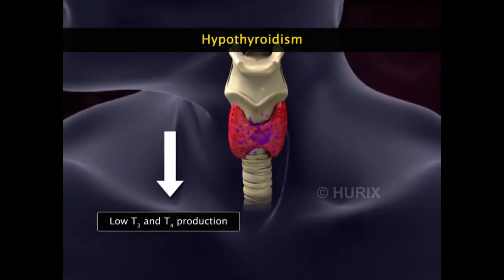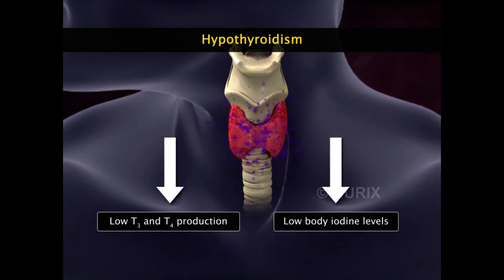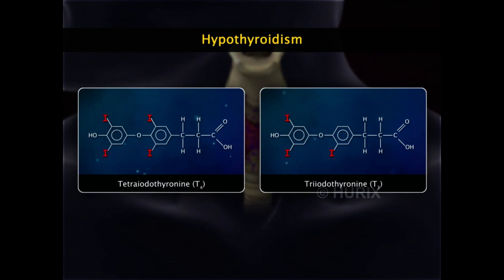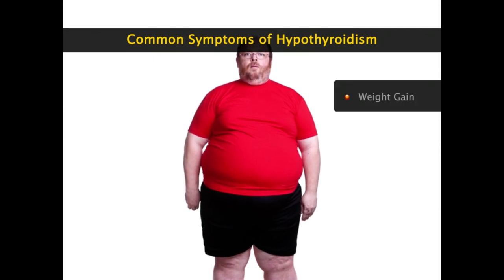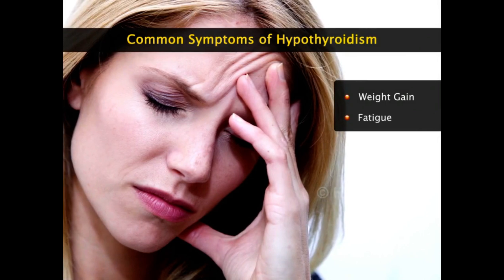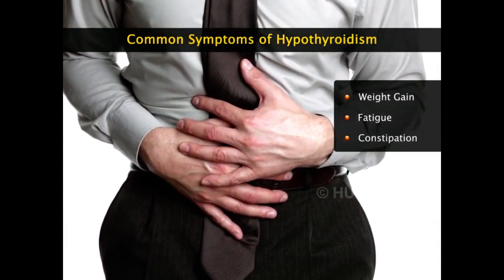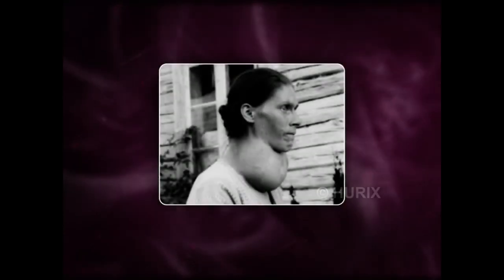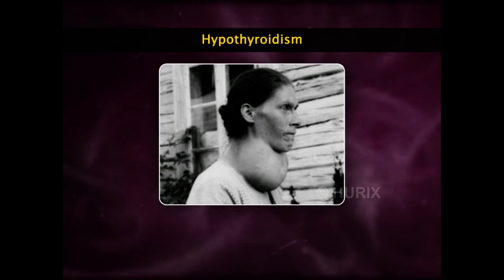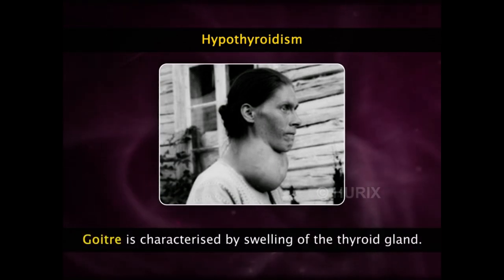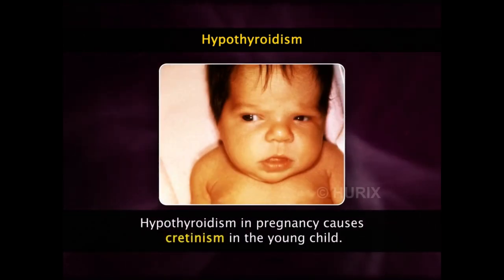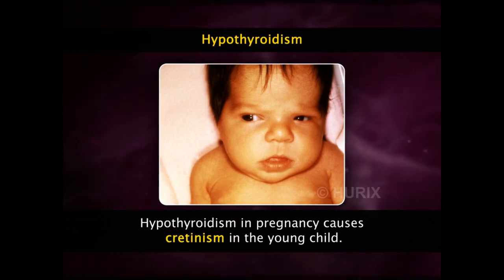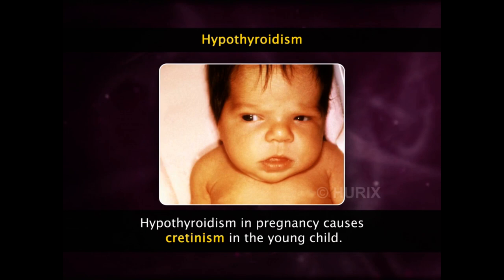Hypothyroidism, or a decrease in secretion of thyroid hormones, is often a result of iodine deficiency, because hormones T3 and T4, which have iodine in their structure, need iodine during their production in the thyroid gland. Hypothyroidism is associated with symptoms such as weight gain, fatigue, constipation, and excessive sleepiness. A clinical condition associated with hypothyroidism is goiter, characterized by swelling of the thyroid gland. Hypothyroidism in a pregnant woman can cause a grave clinical disorder in the child known as cretinism, in which the child shows severely impaired physical and mental growth.